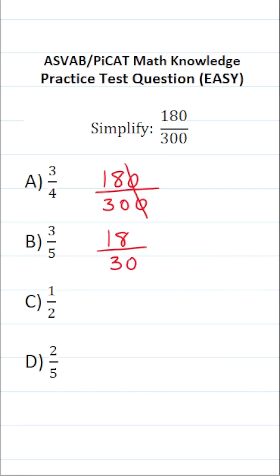Now, in order to reduce this fraction, we're looking for a number that goes into both 18 and 30, and we're going to reduce it by that number.